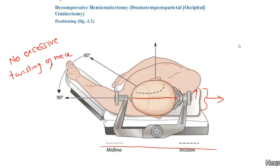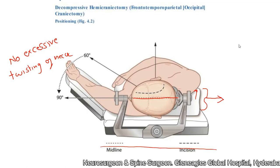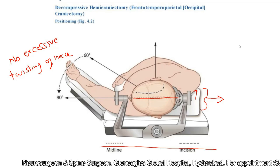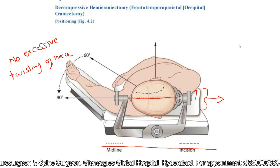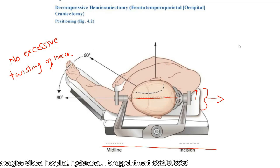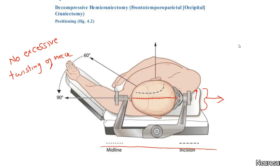There should be no excessive twisting of the neck for obvious reasons: if the patient has cervical spondylosis or canal stenosis, it can cause neurological deficit. More importantly, if there is compression on the jugular vein, it will cause excessive bleeding during surgery. So ensure that there is no excessive twisting of the neck.